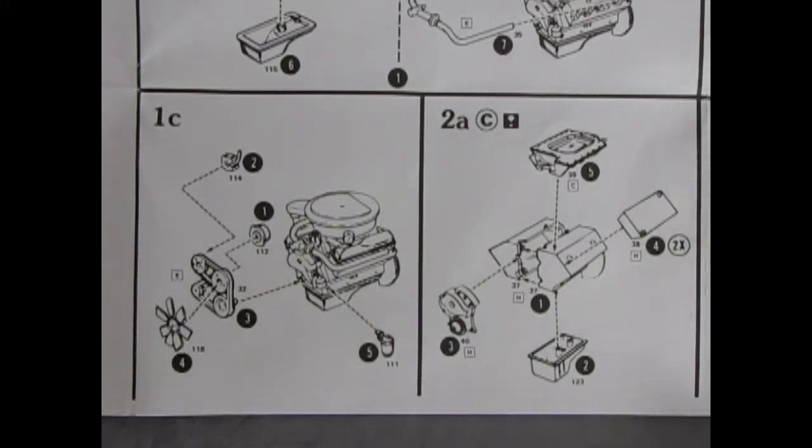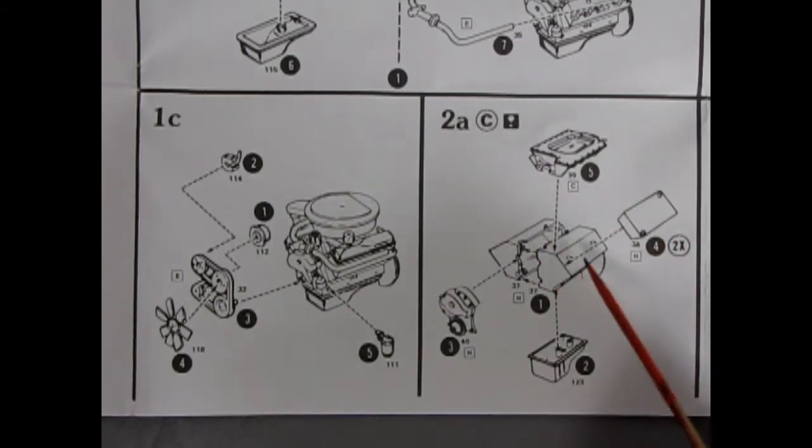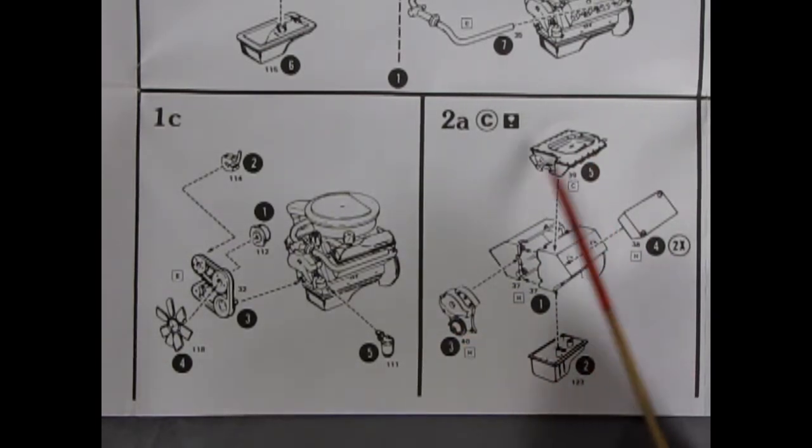And now we get into the 429 in panel 2A and here we have the cylinder heads gluing onto our engine block left and right, timing chain cover, oil pan and look at this intake manifold here.